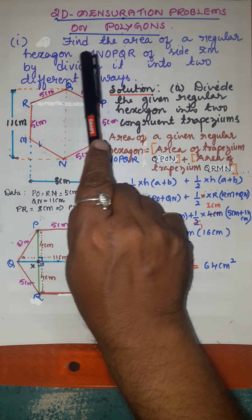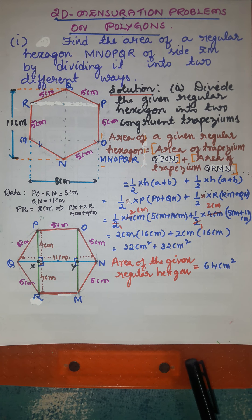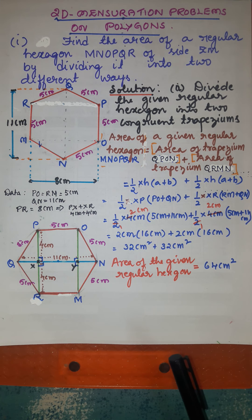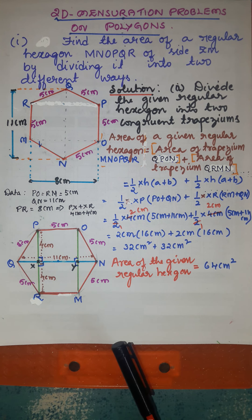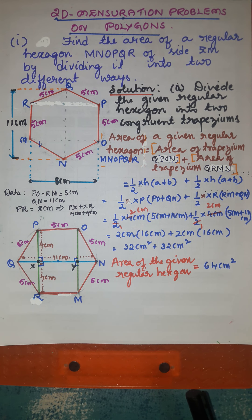Find the area of a regular hexagon MNOPQR. A hexagon is a polygon enclosed by six line segments. A regular hexagon is one in which the measure of each side is equal. We have to find the area of regular hexagon MNOPQR with side 5 centimetres by dividing it into two different ways. After dividing into two different ways, we have to find the area.